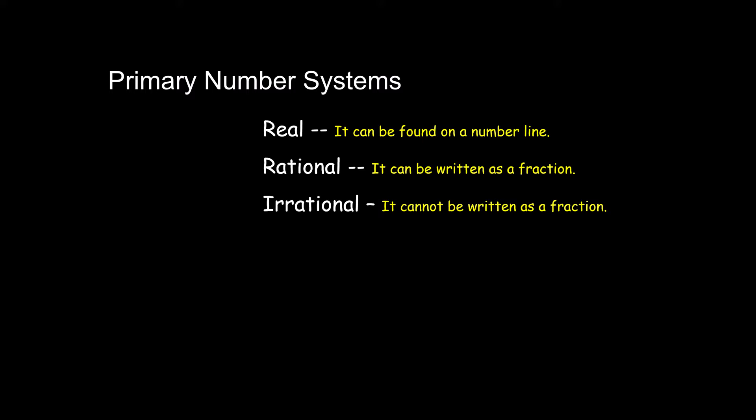Irrational numbers are the decimals that go on and on forever without ending or repeating. Rational numbers are anything that can be written as a fraction — so it's not just fractions, it could also be whole numbers, mixed numbers, terminating decimals, and repeating decimals. Irrational numbers tend to be things like the square root of numbers that are not perfect squares — for example, the square root of 7. If it's not written in that form, we have to use a constant like pi. Most people, when dealing with irrational numbers, will just round those off and work with the closest rational number.